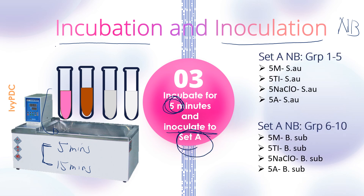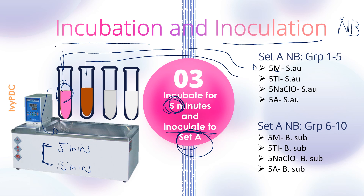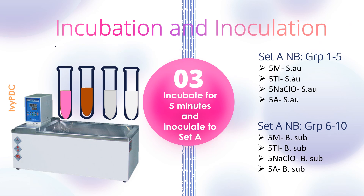These nutrient broths are the ones previously labeled before the experiment started. After five minutes, transfer a loopful of the chemical with the organism into the nutrient broth labeled as merthiolate, then from the tincture of iodine, another loopful into the tube labeled 5TI, and so on. Groups 1 to 5 will have S. aureus and groups 6 to 10 will have B. subtilis. Make sure to only remove the test tube from the water bath when ready to inoculate, and return it immediately after inoculation so incubation continues.